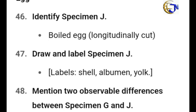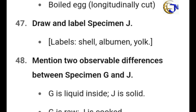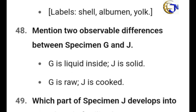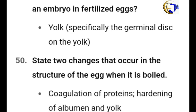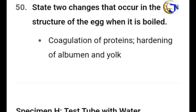The next specimen is Specimen H — a longitudinal section of a boiled egg. Draw and label it; go and learn the diagram. Mention two observable differences between Specimen G and H: G is liquid inside while H is solid; G is raw while H is cooked. Which part of Specimen G develops into an embryo in a fertilized egg? The yolk — specifically the germinal disc on the yolk. State two changes that occur in the structure of the egg when boiled: coagulation of proteins, and hardening of the albumen and yolk.